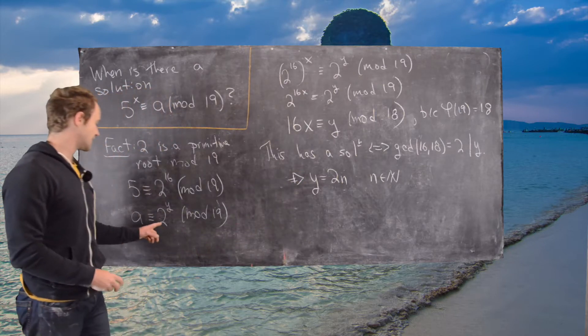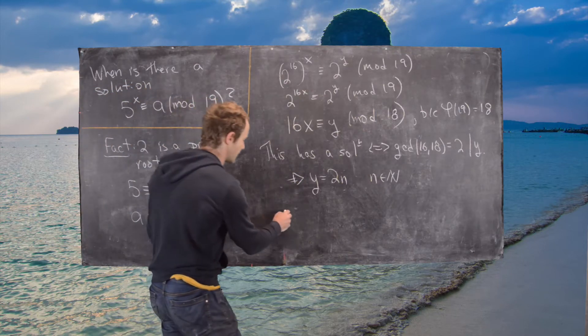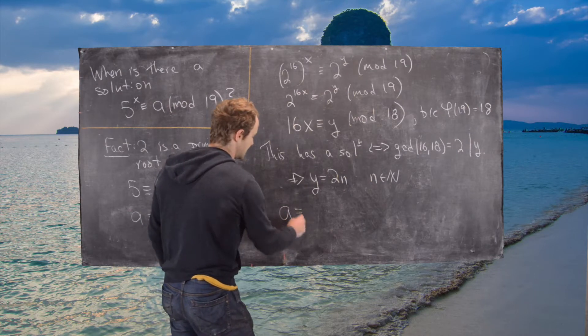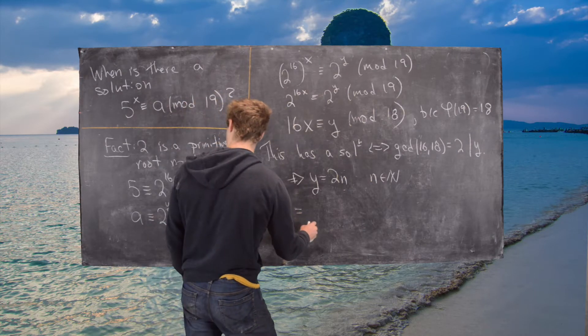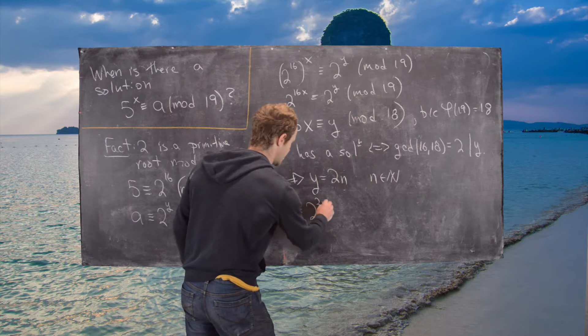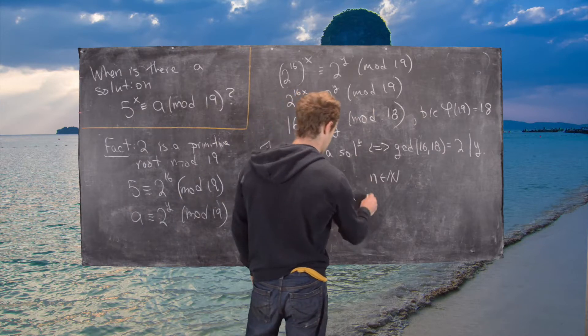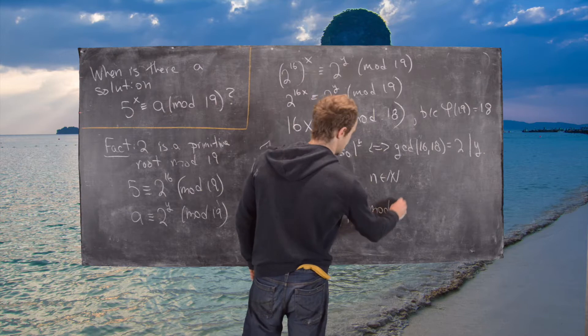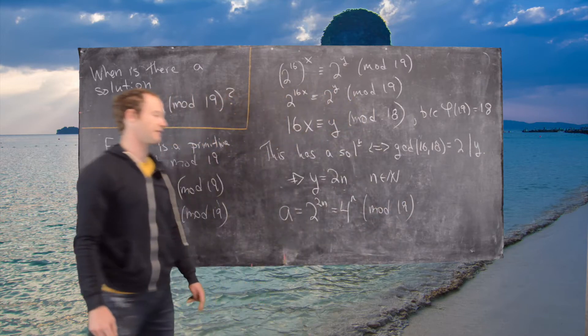And so now notice we can plug that back into here. So now that we have a is equal to 2 to the 2n, which is the same thing as 4 to the n mod 19, because now we're back working with our bases.